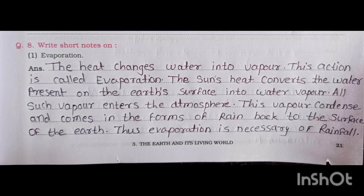Question number eight, write a short note on evaporation. The heat changes water into vapor — this action is called evaporation. The sun's heat converts the water present on the earth's surface into water vapor. This vapor enters the atmosphere, then condenses and comes back to the surface of the earth in the form of rain. Thus, evaporation is necessary for rainfall.